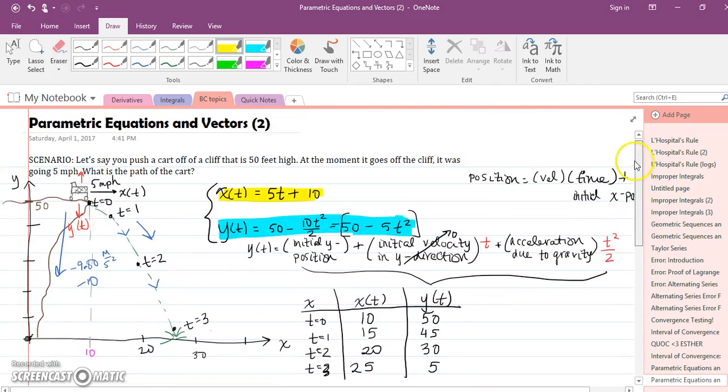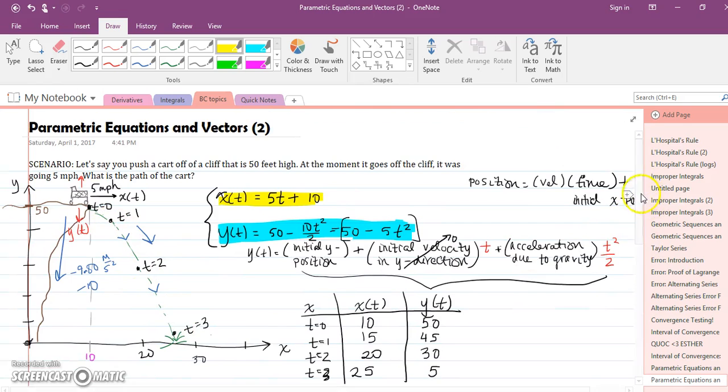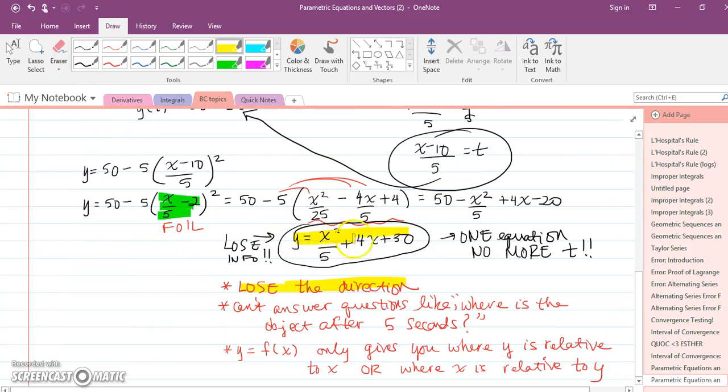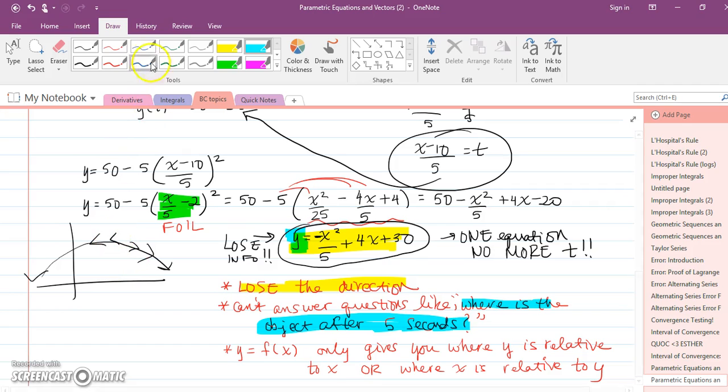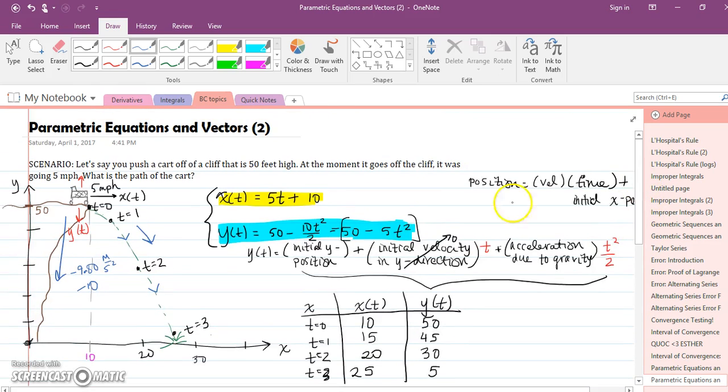So like I said, you lose the direction here. It's very clear that as T increases, we're going this way. So I can put the arrows on it. If you are just given a random parabola like this right here, you have no direction. You have no idea what the direction is. Like if you were to graph this, it would look something like this. You have no idea if it goes this way or this way. Also, you won't be able to answer questions like where is the object after five seconds? Because this right here is y equals a function of x. It can't tell you anything about where we are on this path with respect to time. And usually in physics or applications, you care about what happens with respect to time. So this only gives you where y is relative to x or where x is relative to y. These here tell you where you are on your graph at any time T, which is very helpful in physics.